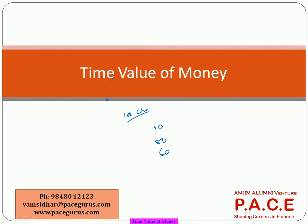So I put in a hundred crores today and expect to receive money in this order: 10 crores after year one, 80 crores after year two, and 60 crores after year three. The second investment, if I put the same hundred crores, would give me something like 70 crores in year one, 50 crores in year two, and 20 crores in year three.